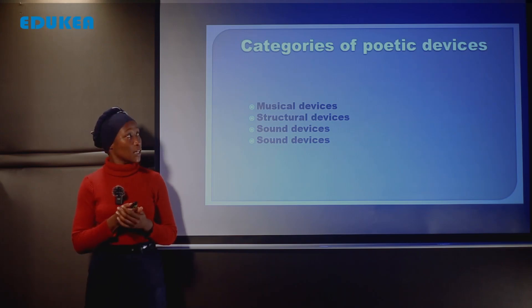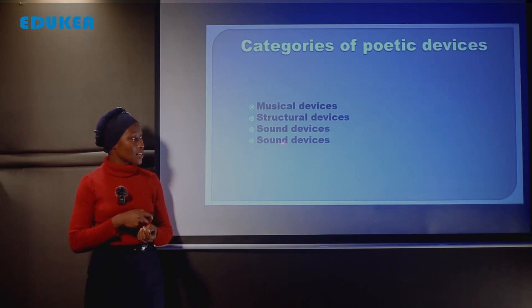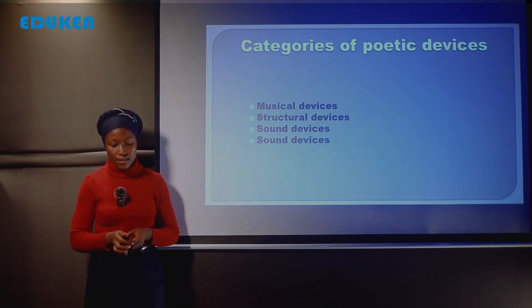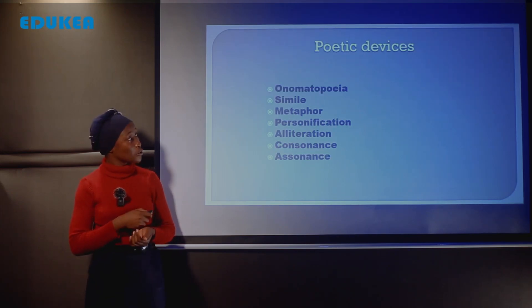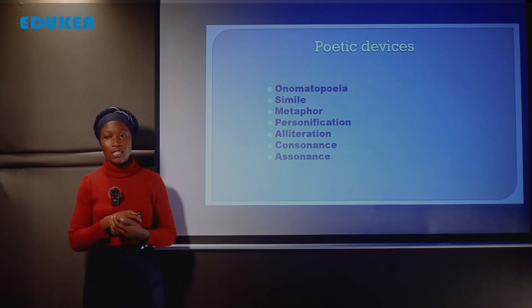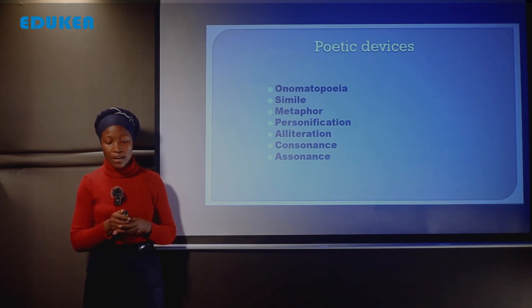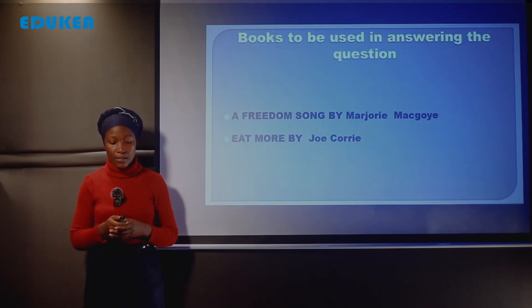We have some categories of poetic devices: musical devices, structural devices, and sound devices. Among the examples, we have onomatopoeia, simile, metaphor, personification, alliteration, and consonance. There are so many, but by mentioning a few, these are some examples of poetic devices or literary devices.